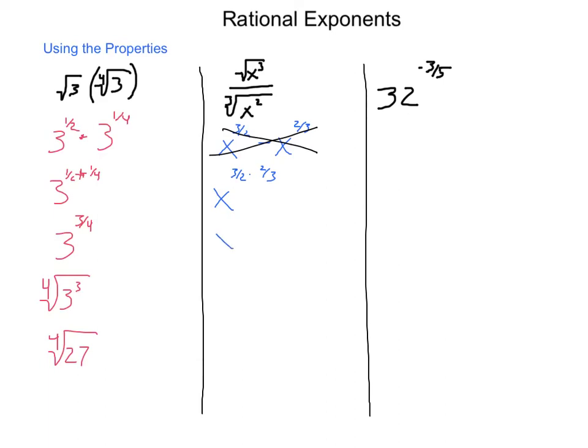So we have x to the 9 sixth minus 4 sixth. 9 sixth minus 4 sixth is 5 sixth. We have x to the 5 sixth power. Writing this in radical form, we end up with the 6th root of x to the 5th. So we took it from a division of 2 items into a single expression.